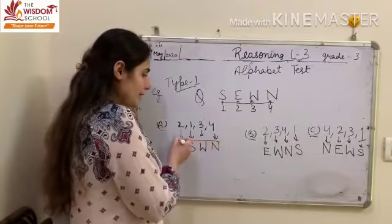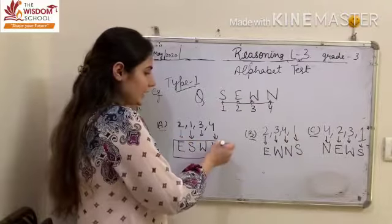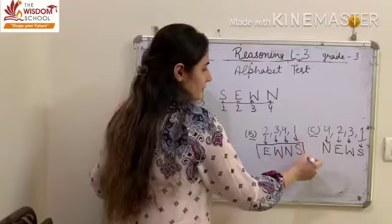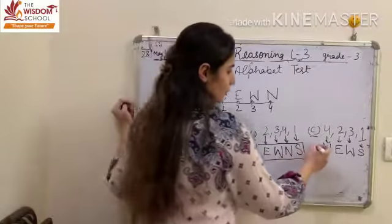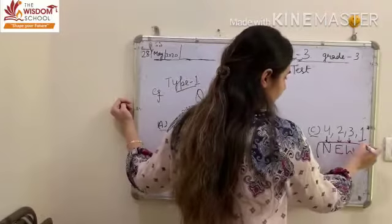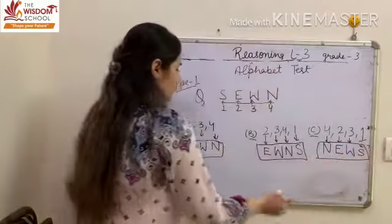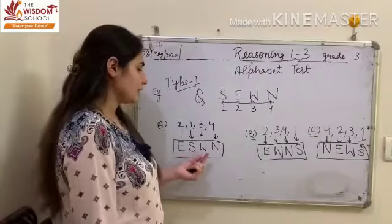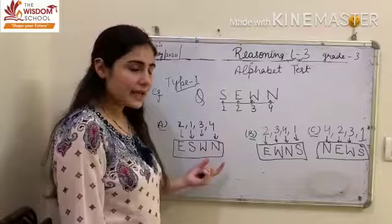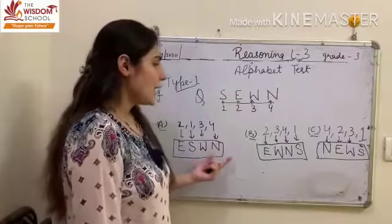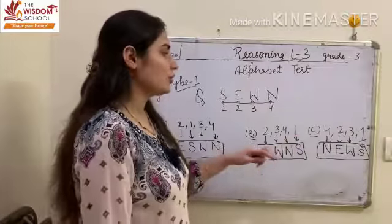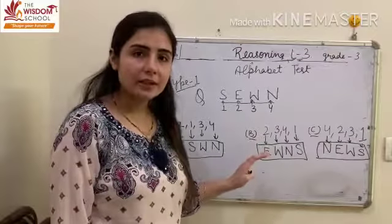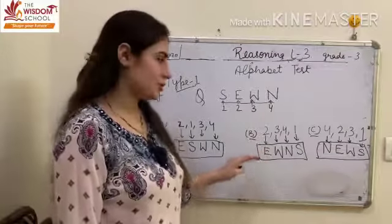अब आप देखोगे बच्चो, जब आपने numbers के नीचे letter लिखे हैं, then here, few words are formed. You can see here, for option A children, the word formed is ESWN. ESWN जो है बच्चो? अब आप जब इन words को चेक करोगे, तो आपको ये भी देखना है children, that the word should be a meaningful word in English.